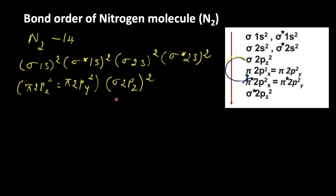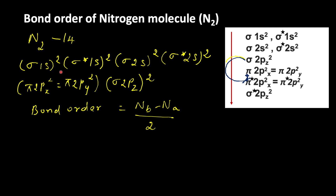Using this information, let us calculate the bond order of nitrogen molecule. Bond order equals Nb minus Na divided by 2, where Nb is the number of electrons in bonding molecular orbitals and Na is the number of electrons in antibonding molecular orbitals. Electrons in sigma and pi orbitals are bonding electrons; electrons in sigma star and pi star orbitals are antibonding electrons.